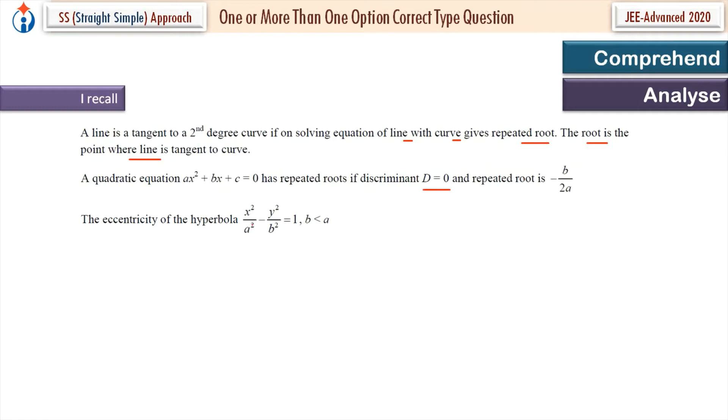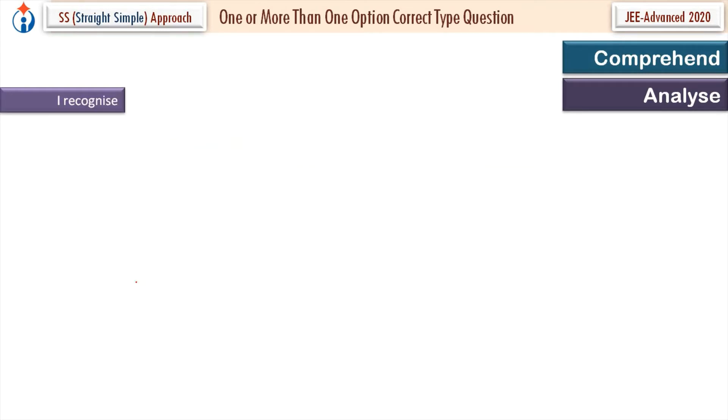And the eccentricity of this hyperbola x² upon a² minus y² upon b² equal to 1. If B is less than A, E is equal to this. So now I recognize that will be the figure's hyperbola. First quadrant, point P, tangent here, passes at this point (1, 0).